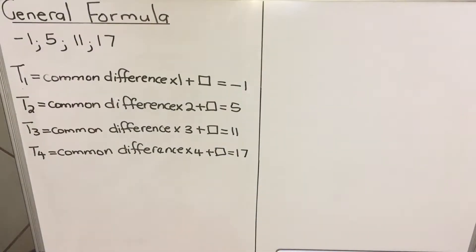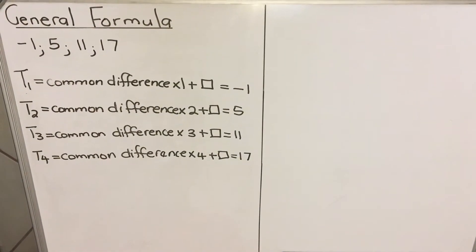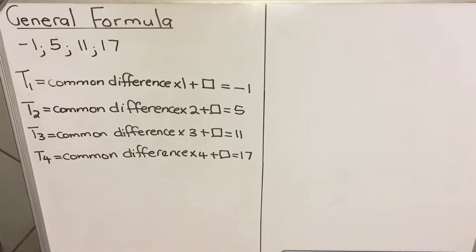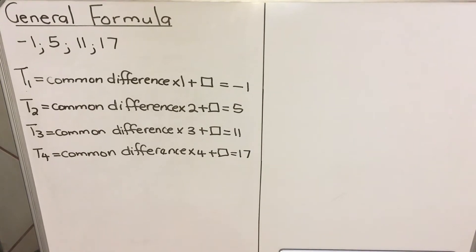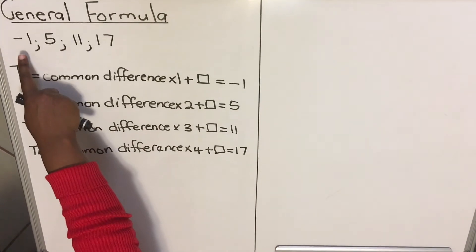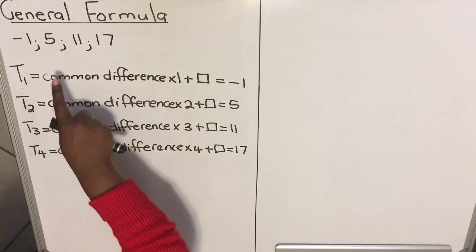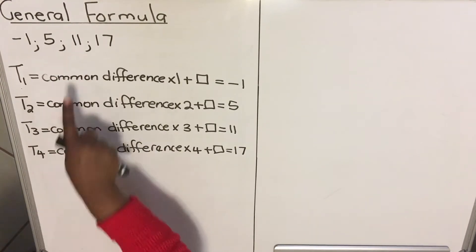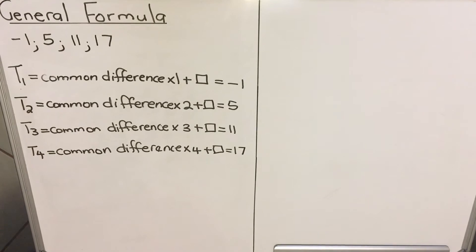Hello everyone, this is a lesson on how we find a general formula for a particular sequence or pattern. The first term is minus one, then you get 5, 11, 17. This is the pattern that we have been given.